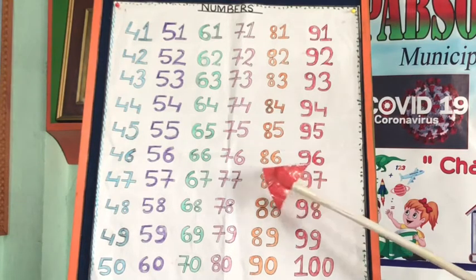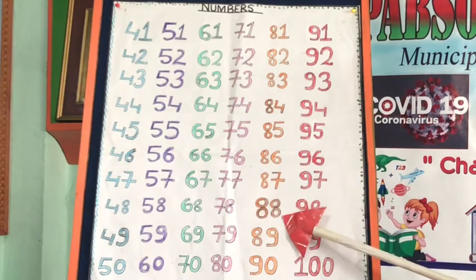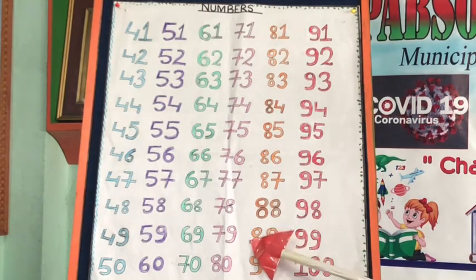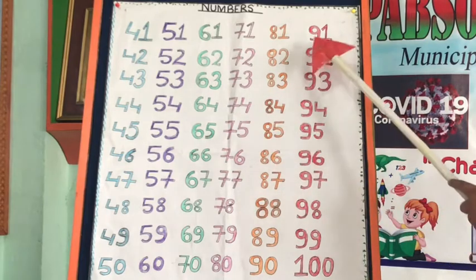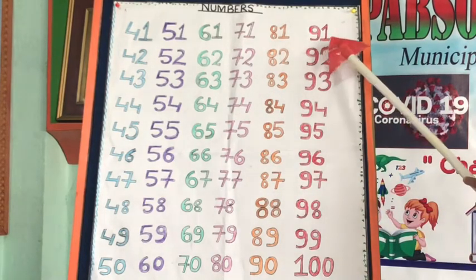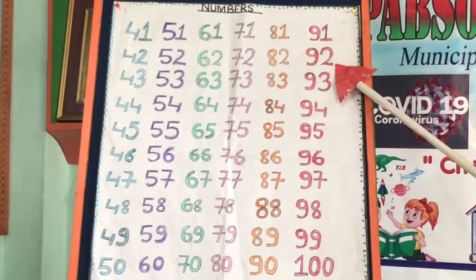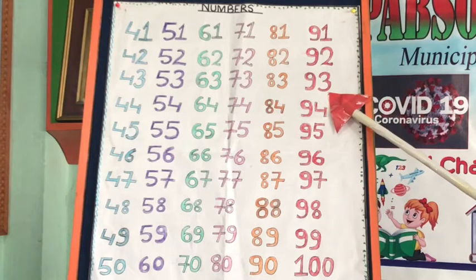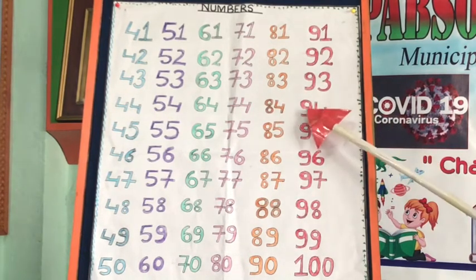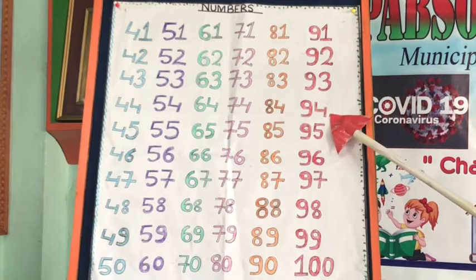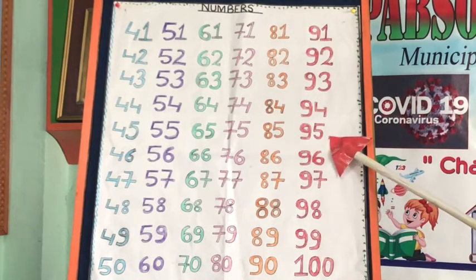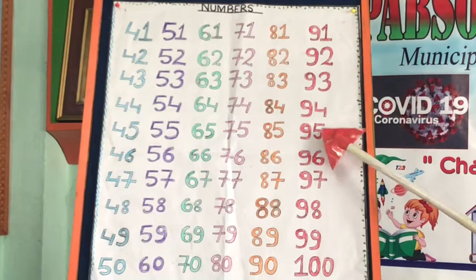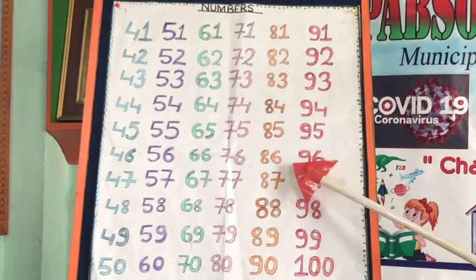87, 88, 89, 90, 91, 92, 93, 94, 95, 96. Each number is read digit by digit and then as a whole: 91, 92, 93, 94, 95, 96.